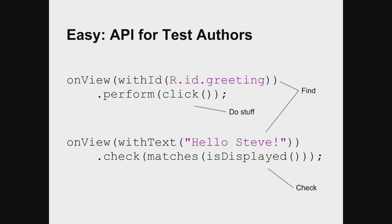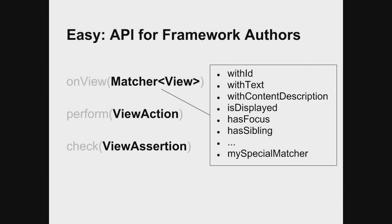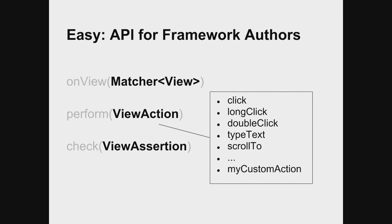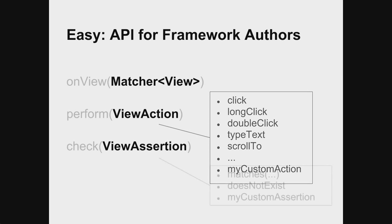We know we're not going to get the API right in the first try, so we provide three main extensibility points. First, the onView method takes a Hamcrest matcher — it's easy to implement. We have pre-canned matchers, but you can write your own. Same thing for view actions — we provide a collection, but you can implement the ViewAction interface to write your own. Same thing for view assertions — most assertions are like view matchers, checking whether a view has some property in its current state. We provide a generic matches method, and you can also assert that a view does not exist in the current view hierarchy. You can write your own.